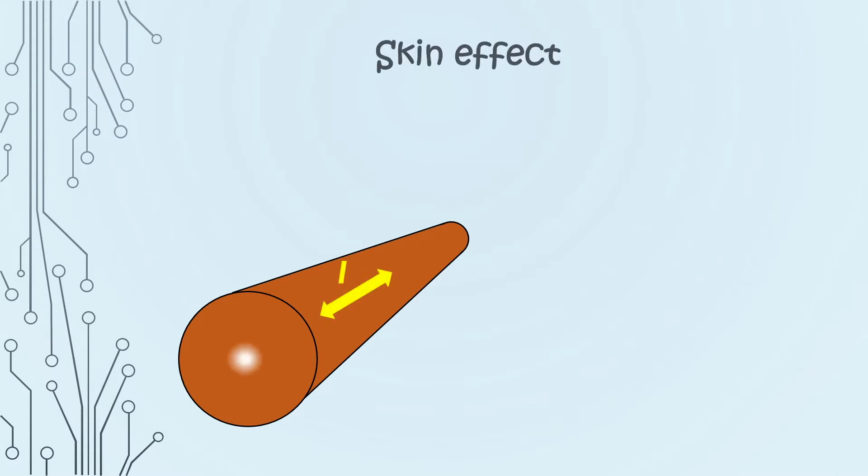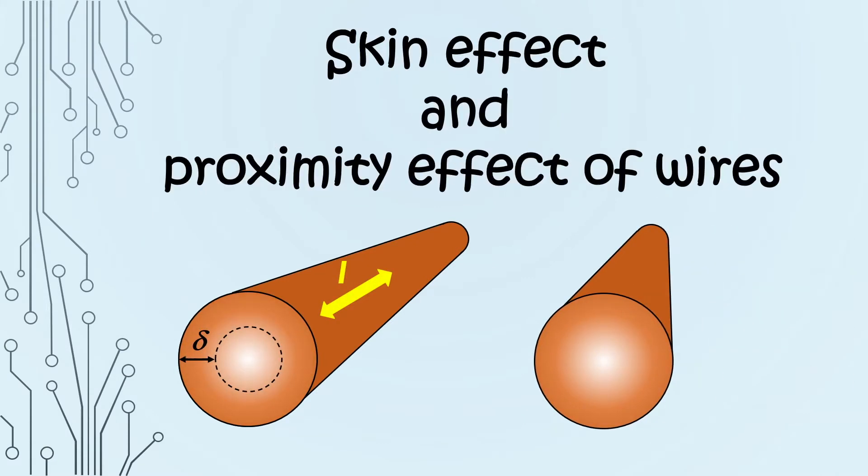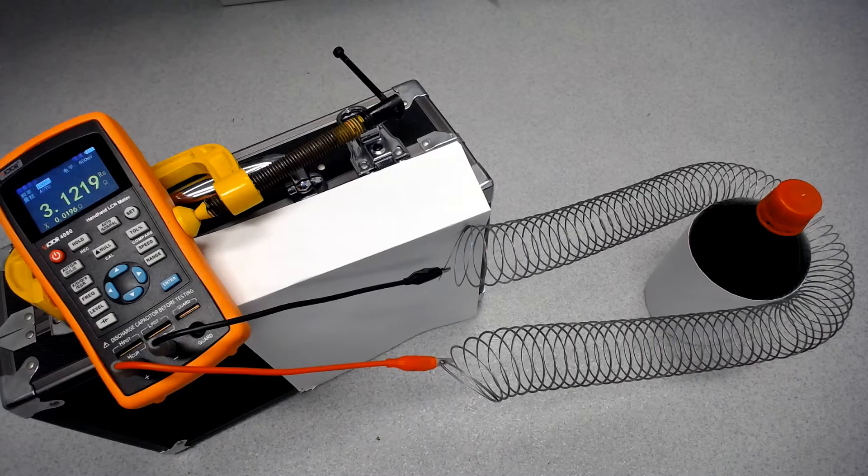In this video, we will talk about skin effect and proximity effect of wires. If you think that the resistance of a wire with a fixed cross-sectional area and length is constant, think twice. Today, I'm going to show you two ways to change the resistance of a wire without changing it.